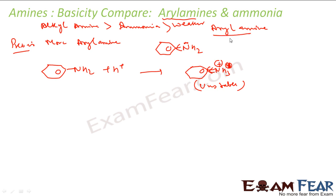Thus arylamine is less basic than even ammonia. The pKb value of arylamine is in the range of 9 to 10, whereas for ammonia it is around 4.2. So arylamine is even less basic than ammonia.